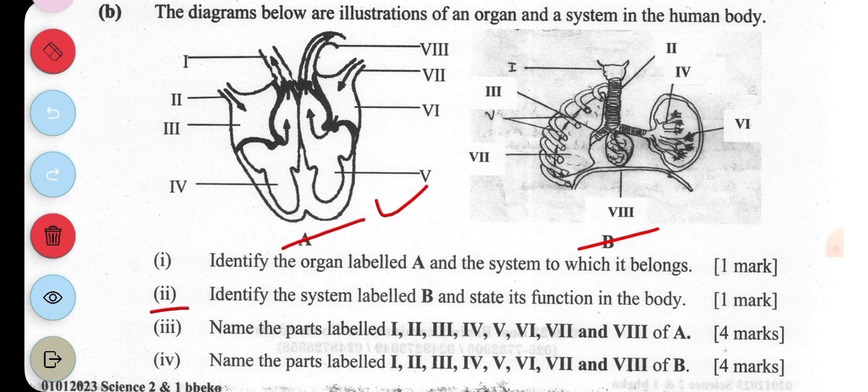The second question is asking us to identify the system labeled B and state its function. This is the respiratory system, and its function is to deliver oxygen to the red blood cells. The oxygen is supplied to the red blood cells, and oxygen from the red blood cells is delivered to the body cells.